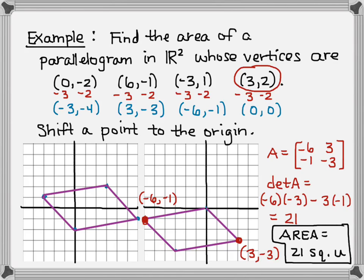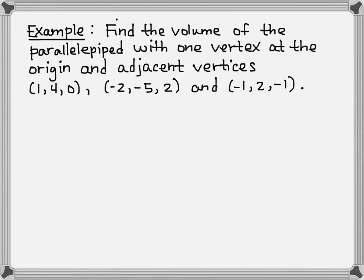Now let's see an example of the parallelopiped. We want to find the volume of the parallelopiped with one vertex at the origin and adjacent vertices (1, 4, 0), (−2, −5, 2), and (−1, 2, −1). We're lucky in this case because they already gave us one vertex at the origin, so they've basically told us what our matrix is going to be — these points will be the columns.